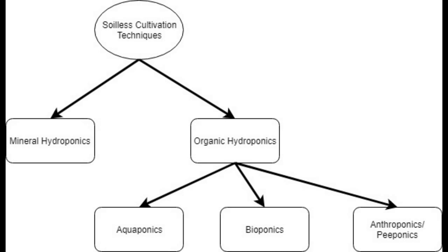Then you have soilless cultivation techniques, and I would really divide these into two main categories: mineral hydroponics and organic hydroponics. Mineral hydroponics is really the type that most people associate with the word hydroponics itself. But I want to make the distinction of adding specifically the mineral part so that you can understand that this type of hydroponics requires salts that are mined.